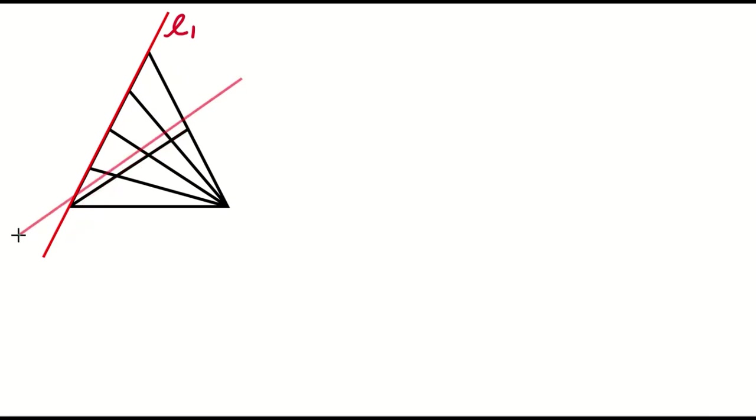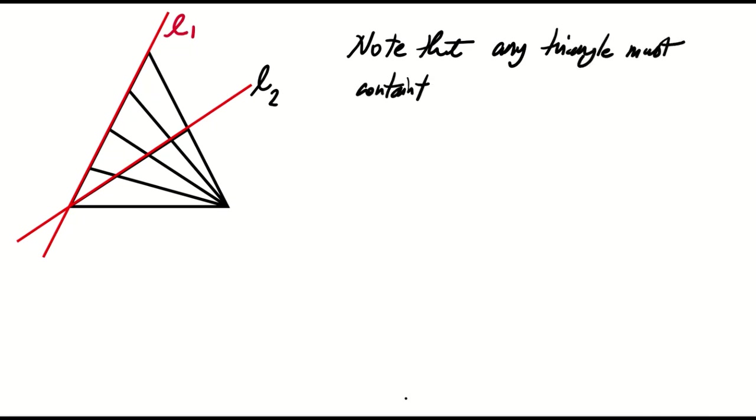Note that any triangle in the figure must include either L1, L2, or both as its sides. With this in mind, let's consider three different cases. In case one, we calculate the number of triangles containing only L1 as a side.